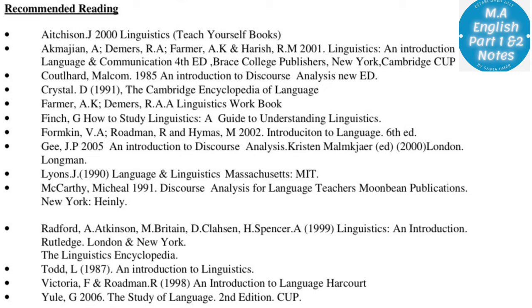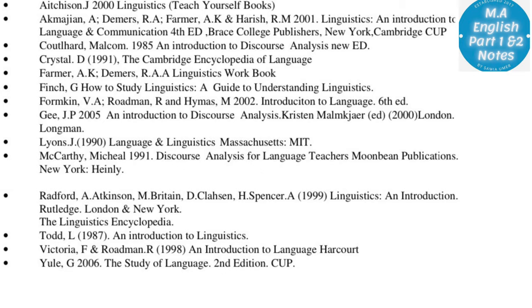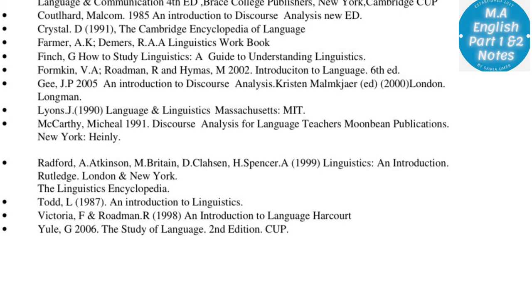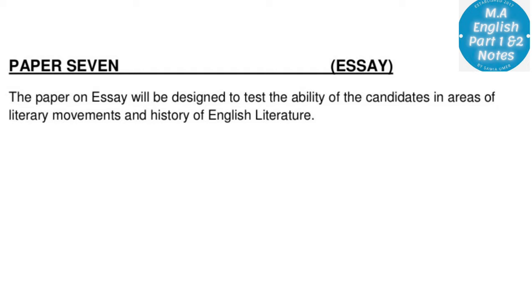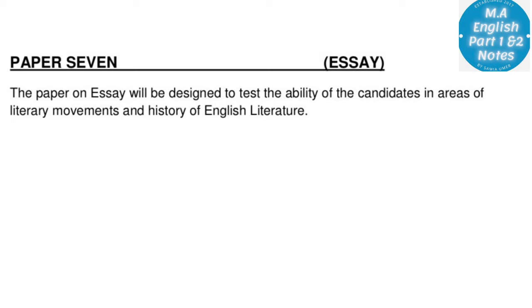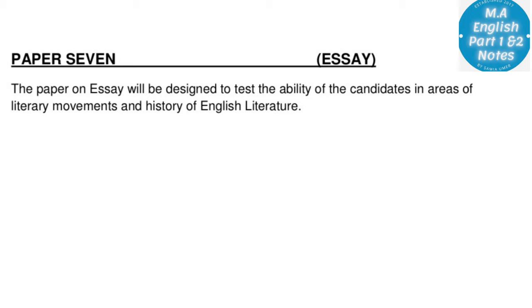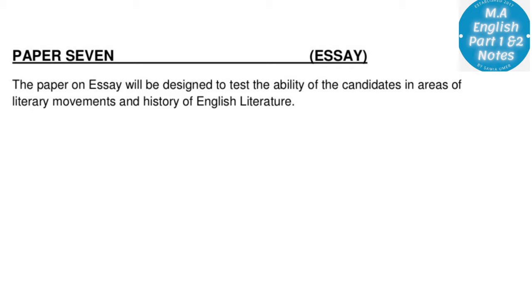The link will also be in my description box. Paper Seven is Essay — the paper is designed to test the ability of candidates. Many students opt for this paper as they find it convenient. Topics include various literary movements and history of English literature — different periods of English literature are covered in this paper.